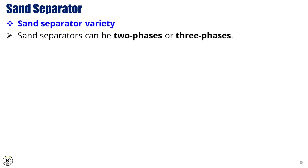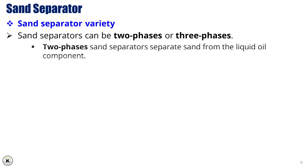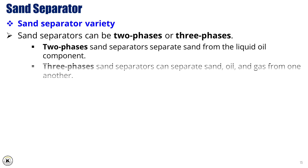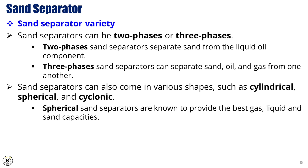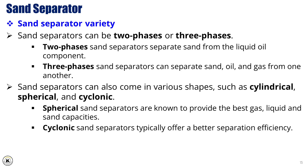Sand separator variety. Sand separators can be two-phase or three-phase. Two-phase sand separators separate sand from the liquid oil component, while three-phase separators can separate sand, oil, and gas from one another. They can also come in various shapes such as cylindrical, spherical, and cyclonic. Spherical sand separators are known to provide the best gas, liquid, and sand capacities. However, cyclonic sand separators typically offer better separation efficiency.